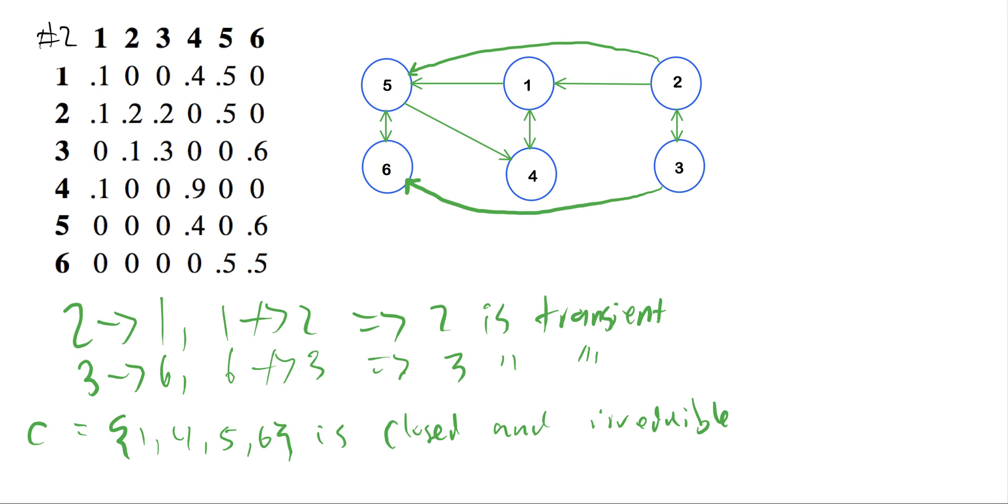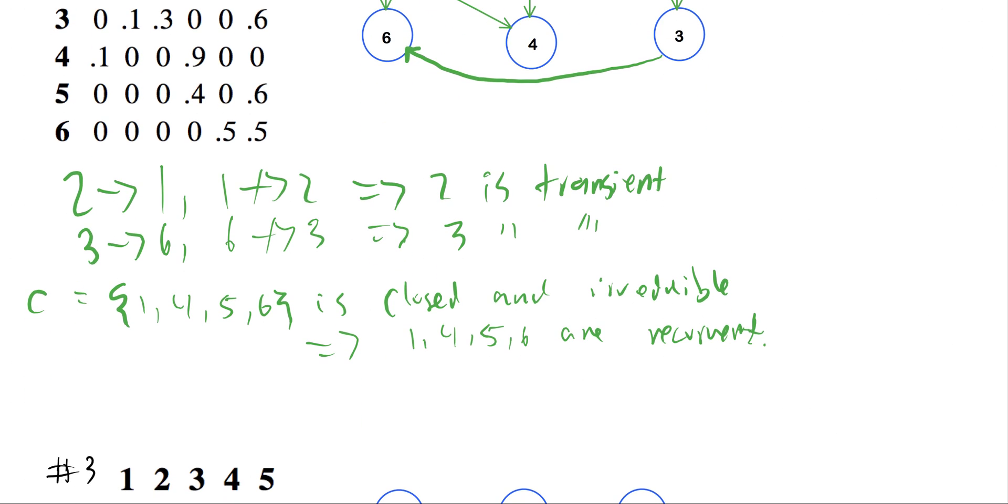And then by our definition, if a set C is closed and irreducible, all the states inside the set are recurrent. So this implies that states 1, 4, 5, and 6 are recurrent, and we are finished. So again, we've gone through all of states 1 through 6. We've notified which ones are transient, we've identified which ones are recurrent, and also the set that's closed and irreducible.